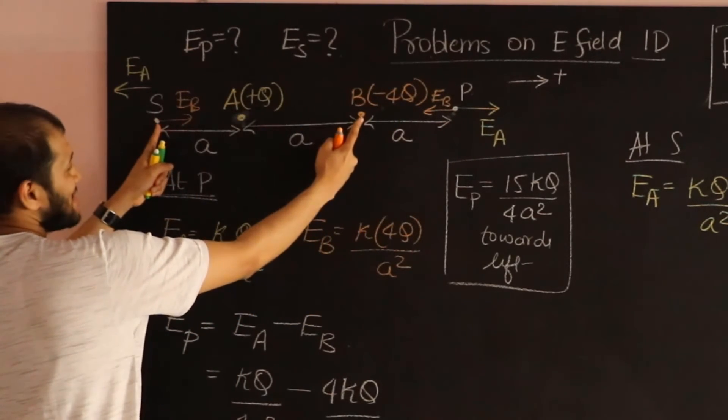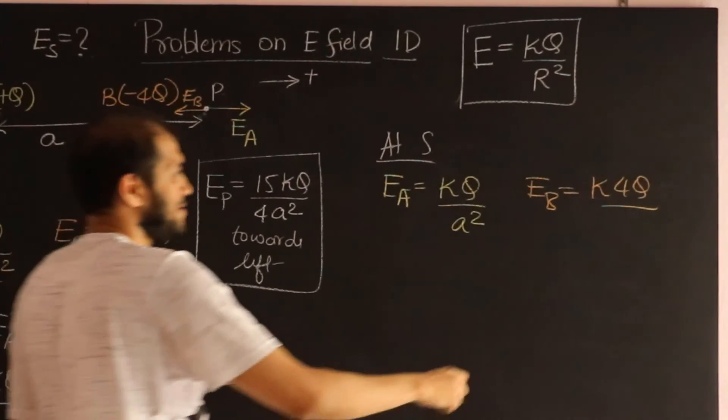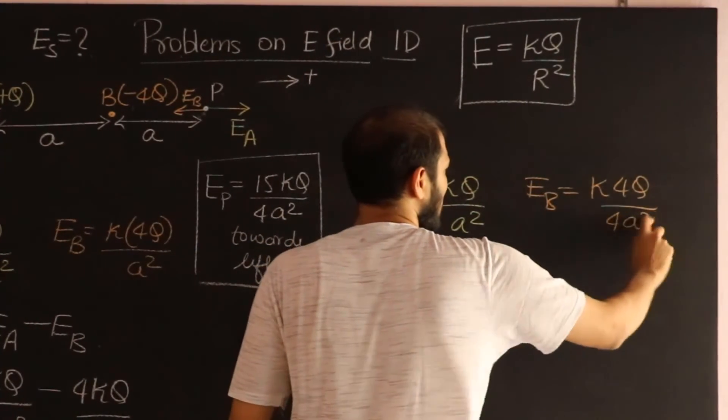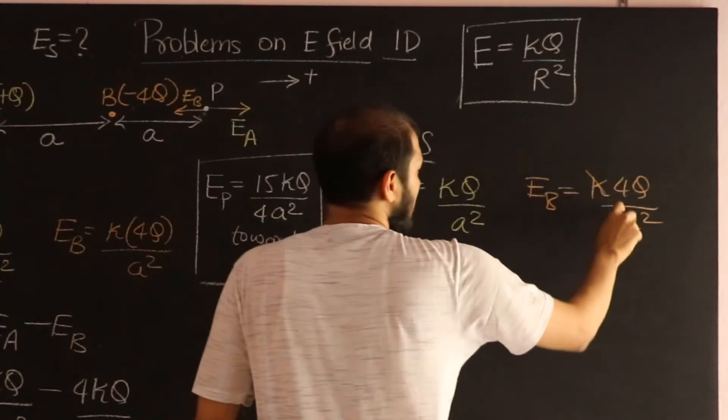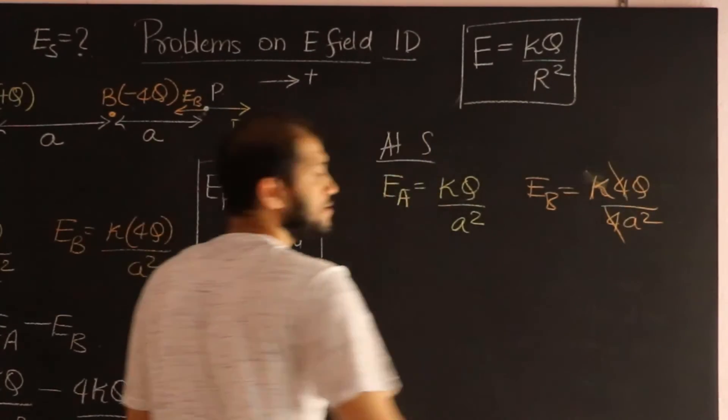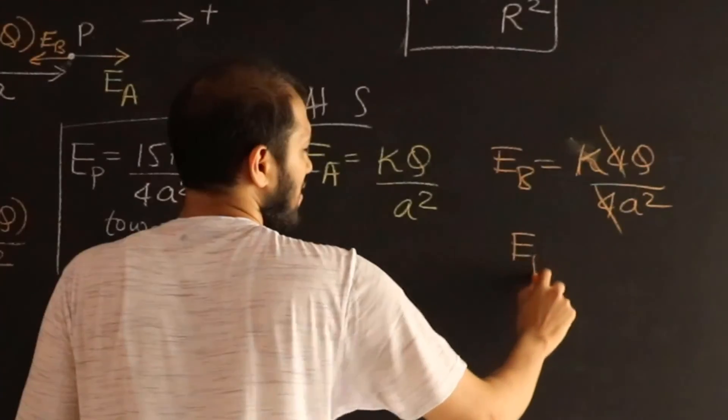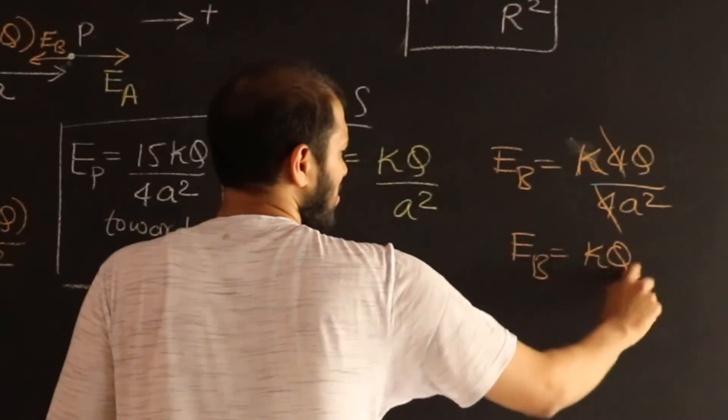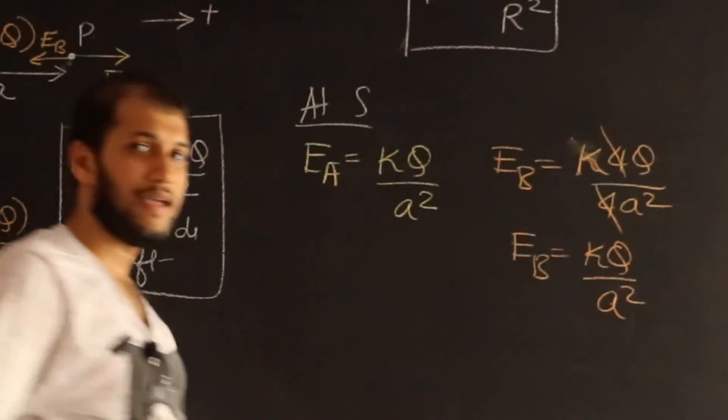B to S, this distance, 2a the whole squared. So that's 4a squared. And, this cancels. So we get E_B as kq divided by A squared.